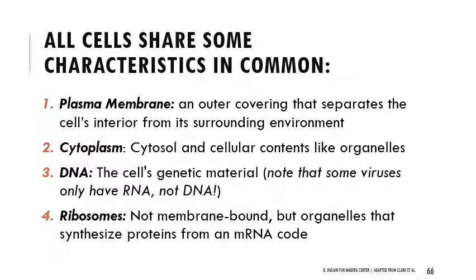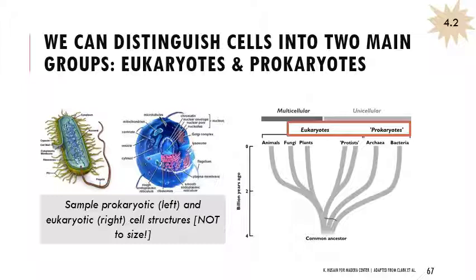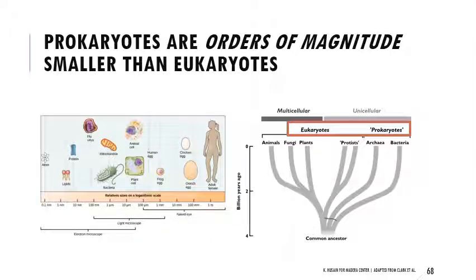When thinking about different classifications of life, there are cells that structurally look very different from one another. Some are considered prokaryotes — including archaea and bacteria — and others are eukaryotes, including animals, fungi, plants, and protists. Prokaryotes are very, very tiny — roughly the same size as the organelles inside of our cells, like mitochondria, and orders of magnitude smaller than eukaryotic cells. You actually have more bacterial cells in your body than your own cells, but you still look like yourself because bacterial cells are so tiny that trillions of them don't take up much space.